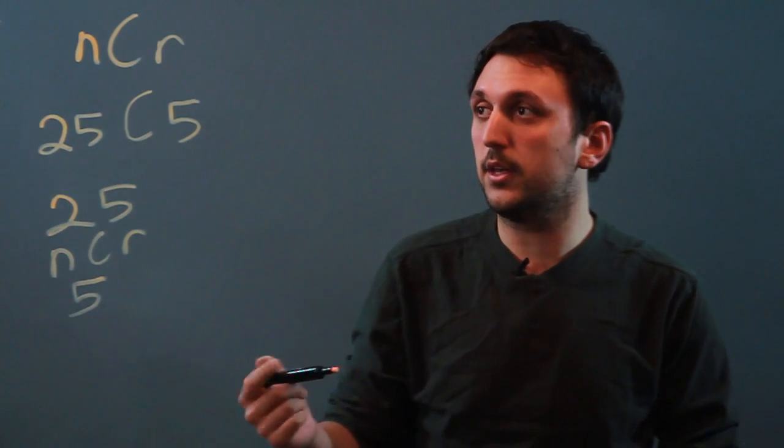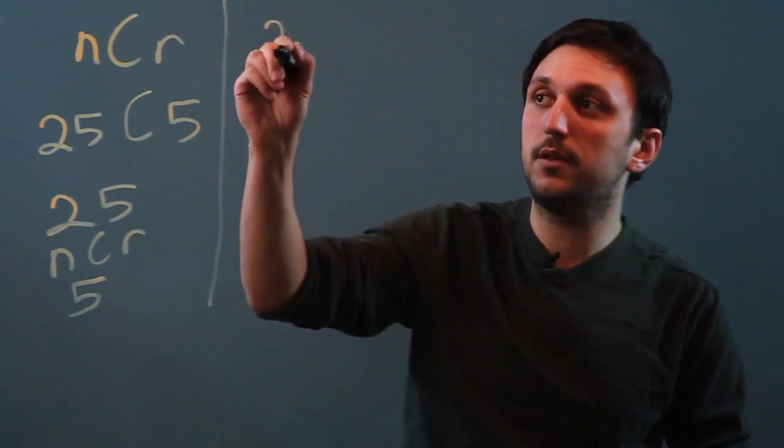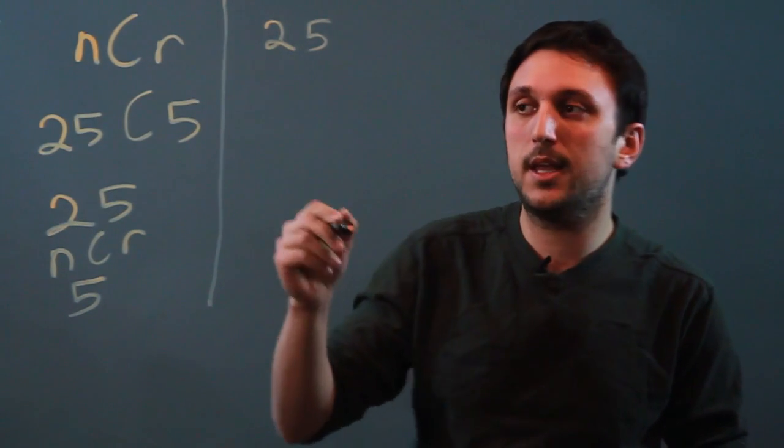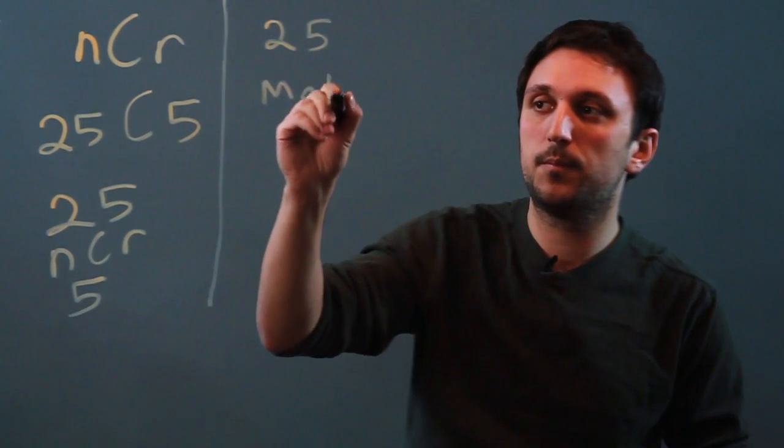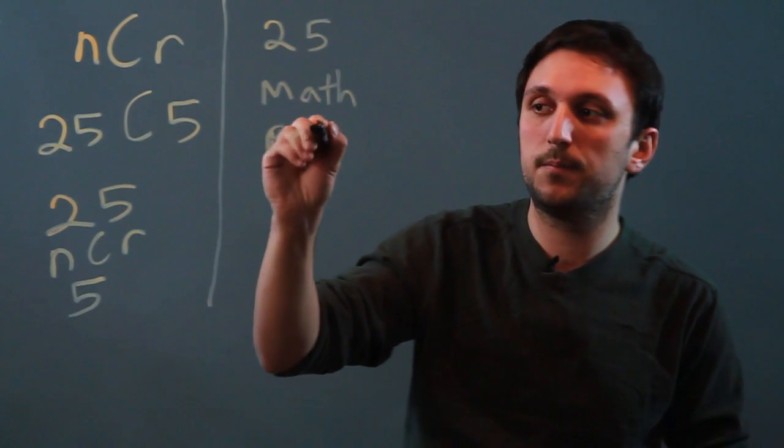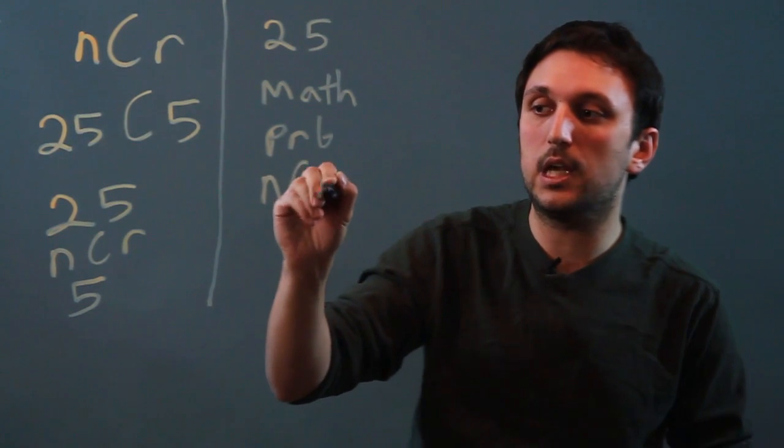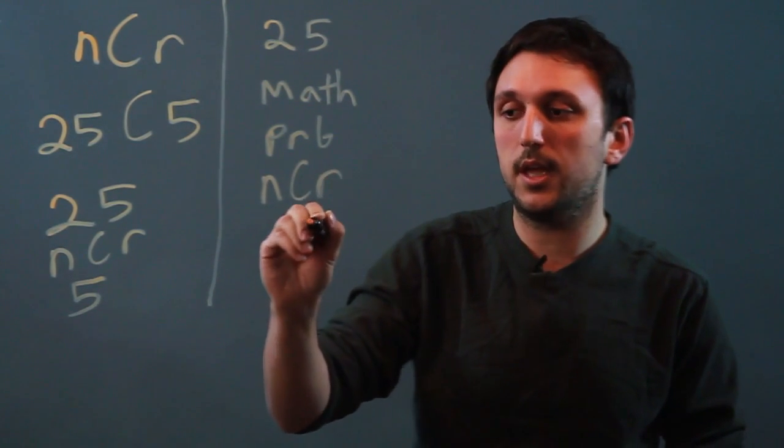Now, if you have a graphing calculator, you have to hit 25, then hit the math button, then hit PRB, then scroll down and hit NCR, then hit 5.